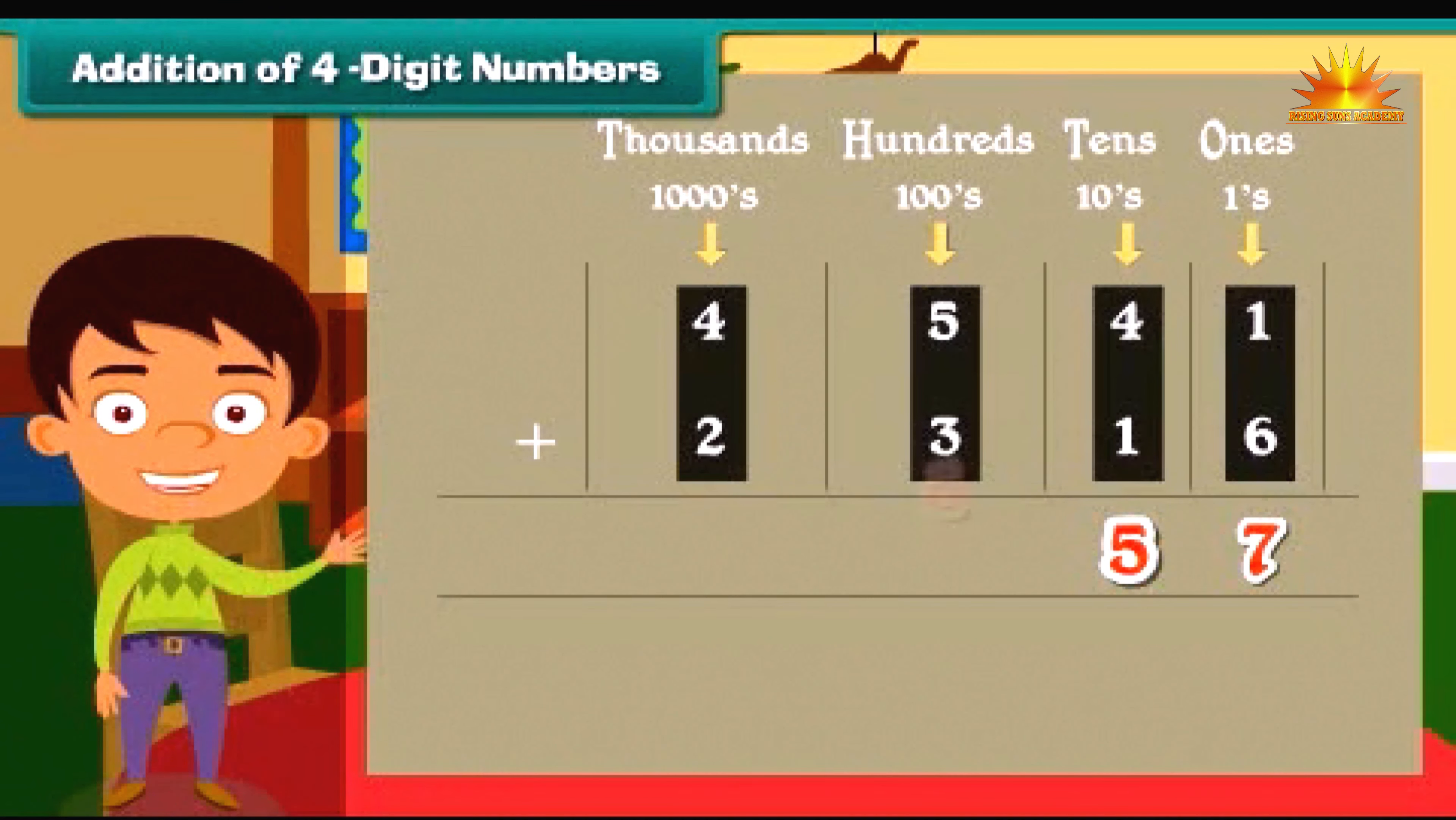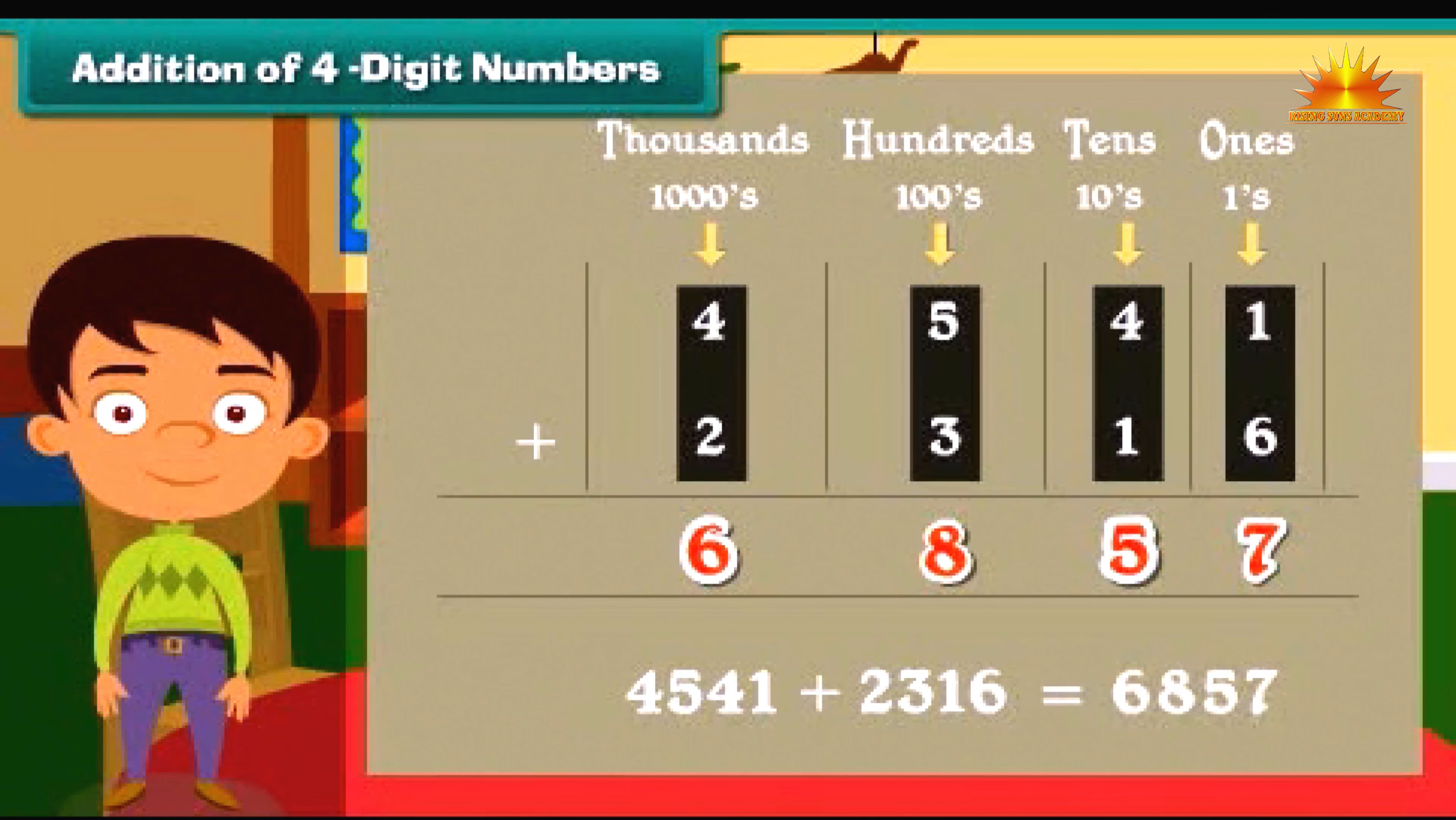The numbers we get are eight and six respectively. So given numbers 4541 and 2316, when added, is equal to 6857.